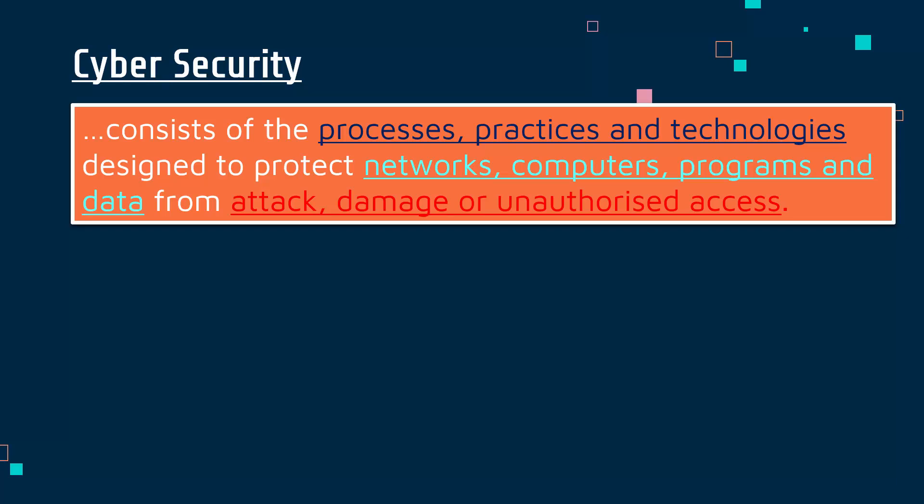First, 'cyber' as a prefix just means related to computers, related to networks — cyber bullying, cyber attack, cyber threat — just related to a computer. The first part of this definition, shown in blue, is about what we're going to do for protection. Processes and practices are more about policies, while technologies are about what we actually do — what devices or software we put in place to provide protection.